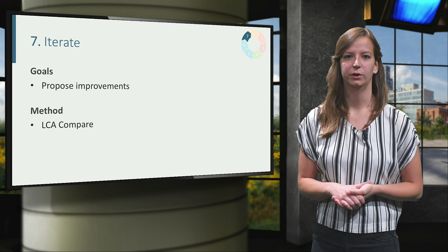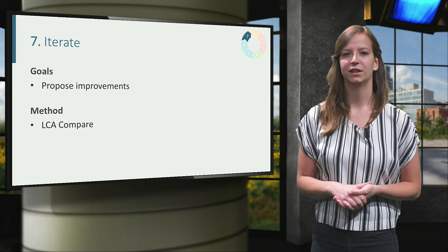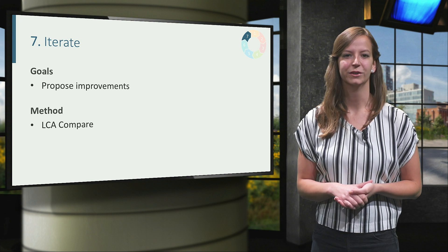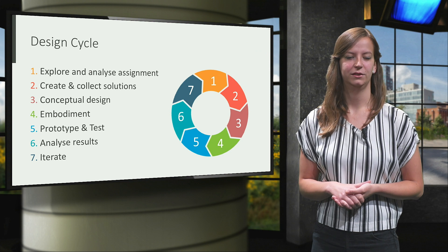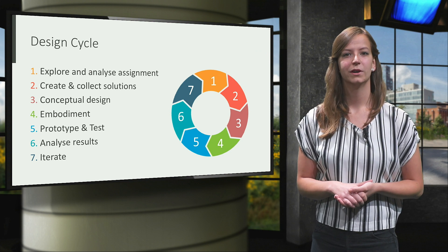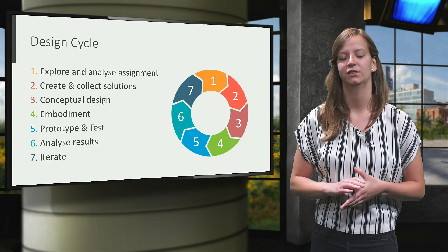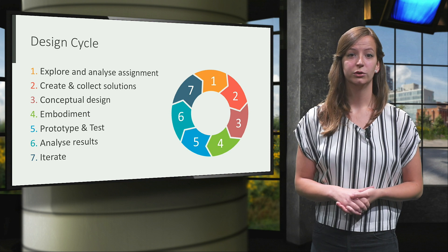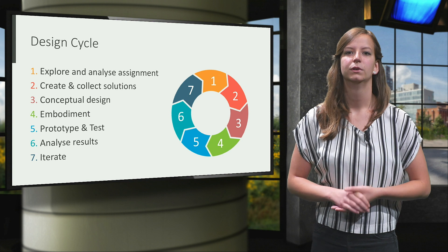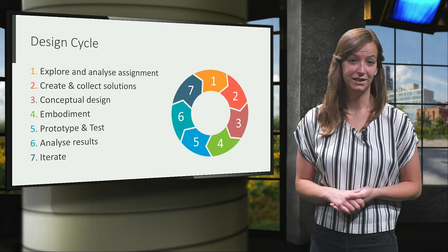When the iteration phase was successful and the analyze results phase showed that the product met your requirements, you successfully implemented sustainability into your engineering project. Well done! This was a short explanation on how you can take sustainability into account in your design process. We hope you have learned how to make sustainability specific and how to successfully implement it in each step of your design process. Use the methods that are most suited for you and your project in the time available, and use the sources in this video to look up more information on specific topics when needed.